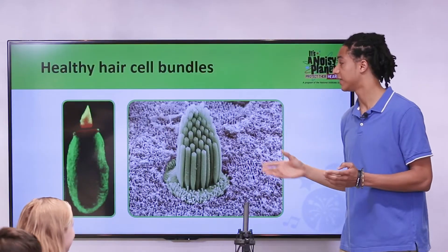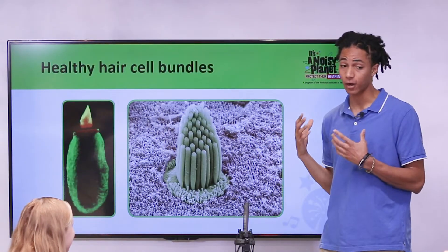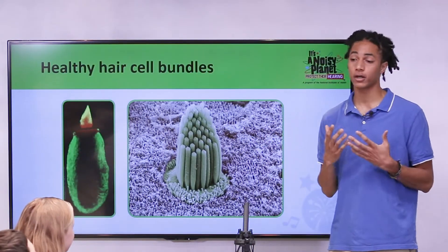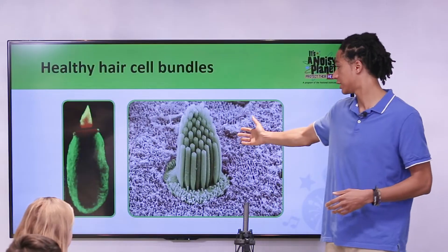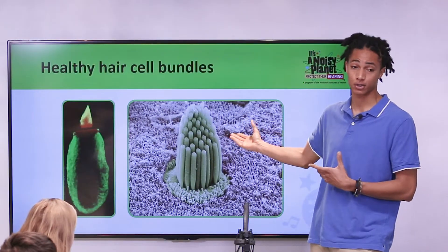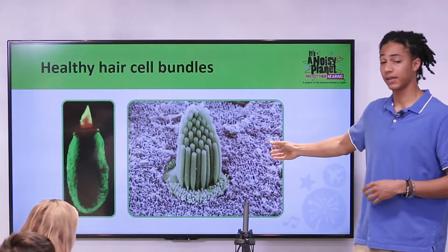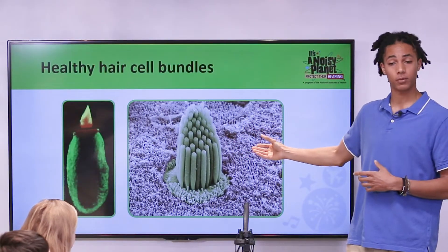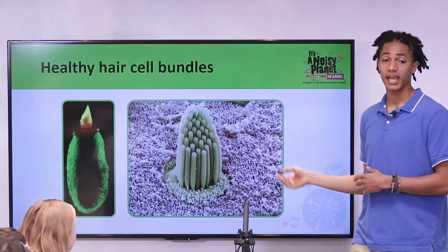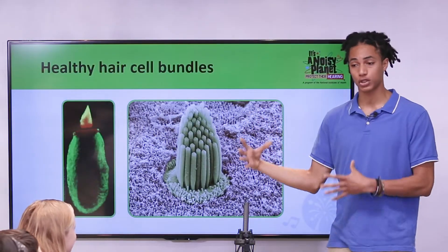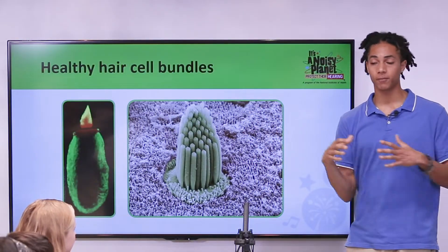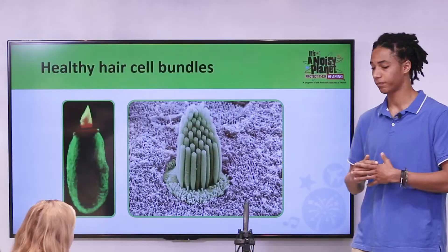These aren't like the hair on our head, but they're called hair cells because of their hair-like structure. They lay in the liquid portion of the cochlea, and when sound vibrations move through the cochlea, they bend the hair cells. When they bend, that sends an electrical signal to the brain so that we can hear.